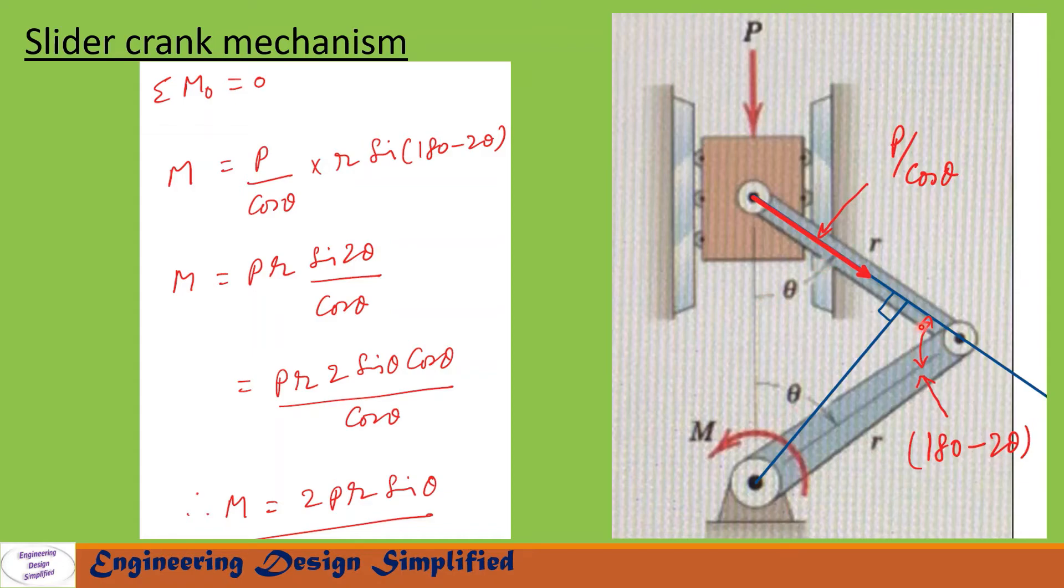So this angle here will become 180 minus 2 theta. Now let us draw a perpendicular line from this point onto this coupler link. This line length will be r into sin 180 minus 2 theta, since this angle is 180 minus 2 theta.